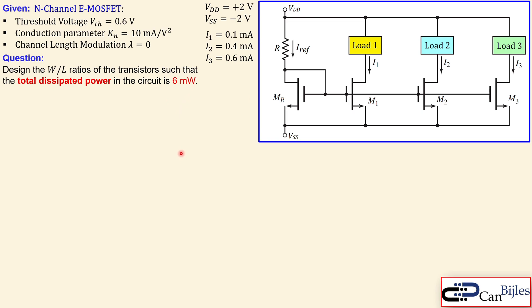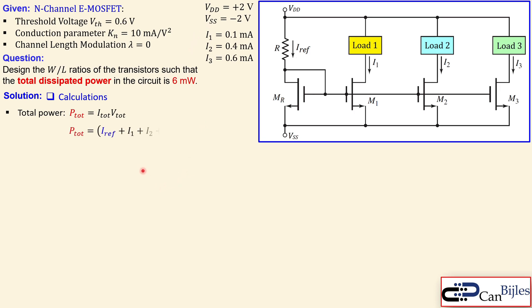So how do we solve this problem? First, we know the total dissipated power must equal 6 milliwatts. The total power equals the total required current times the total voltage, which is VDD minus VSS — that is four volts. The total current includes not only the three load currents but also the reference current. So we sum all four currents and multiply by the voltage difference. I_total equals P_total divided by VDD minus VSS.